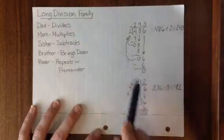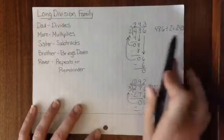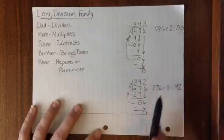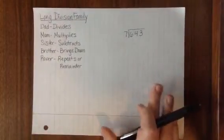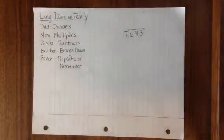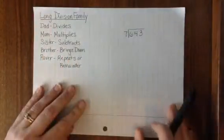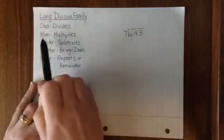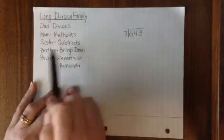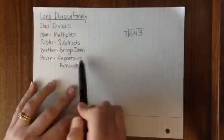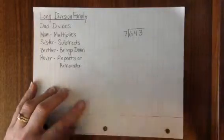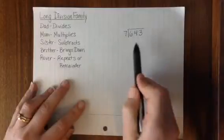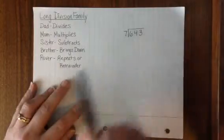These were two fairly simple division problems that worked out quite nicely with no remainders. If we look at another division example, we have the opportunity to once again use our division steps in long division. We will use our long division family once again. Dad will divide, Mom will multiply, Sister subtract, Brother will bring down, and Rover will repeat. Or if we get to the end of the problem and there is nothing for Brother to bring down, Rover will write the remainder. Let's take a look at this example: 643 divided by 7.